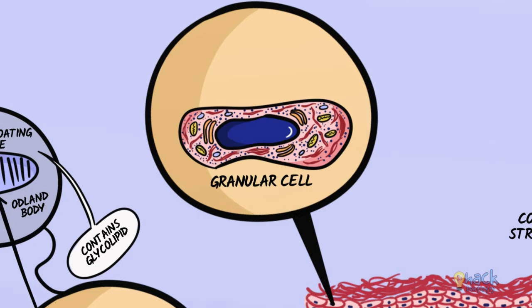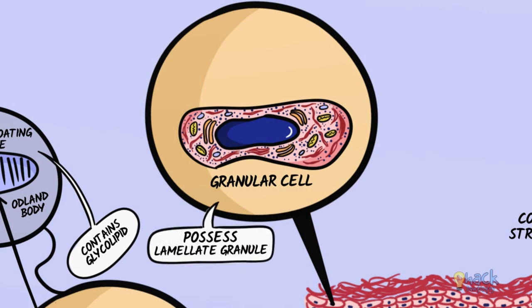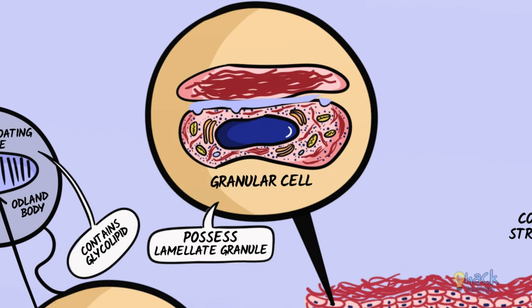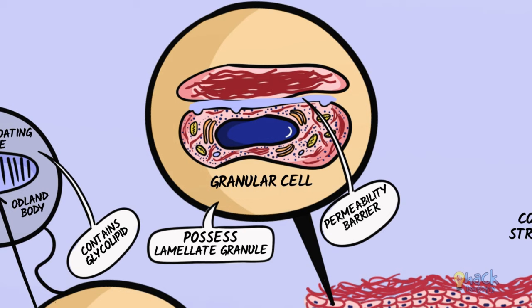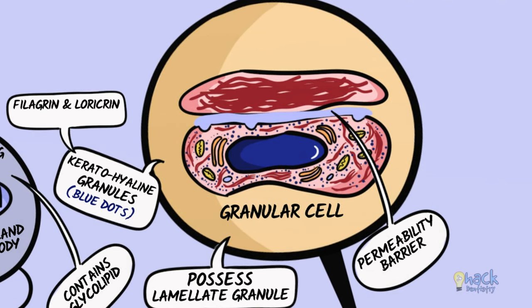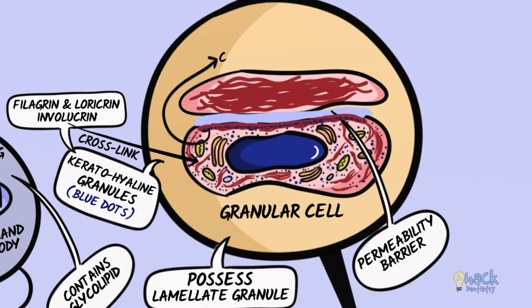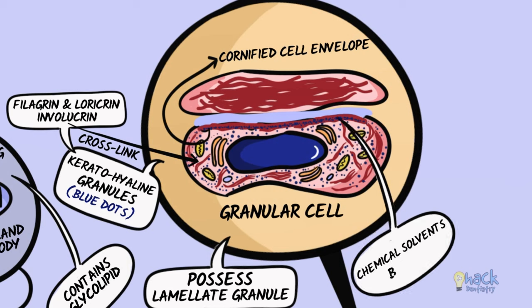Cells in the granular layer are flat but have a greater volume than cells in the spinous layer. These cells also possess lamellar granules, which fuse with the cell membrane and release their lipid content into the intercellular space between the granular and corneal layer, forming a permeability barrier. The granular layer is so called due to the presence of basophilic keratohyalin granules produced by ribosomes, which contain proteins called filagrin and loricrin. These proteins, along with involucrin, form strong crosslinks with tonofilaments, and this aggregation forms an envelope called the cornified cell envelope inside the cells just below the plasma membrane, acting as an effective barrier to chemical solvents.